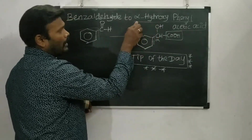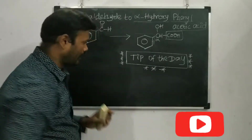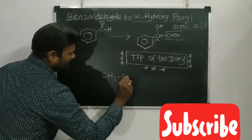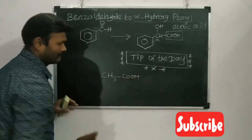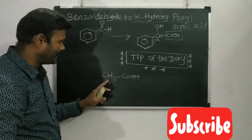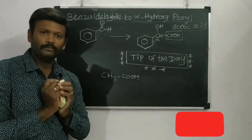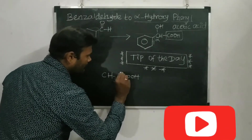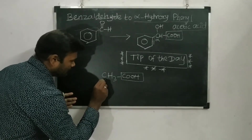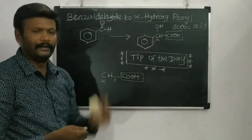The product given is alpha hydroxy phenyl acetic acid. The main component is acetic acid. Acetic acid is a two-carbon containing acid. The carboxylic acid group (COOH) is the functional group. The carbon directly attached next to that functional group is called the alpha carbon.